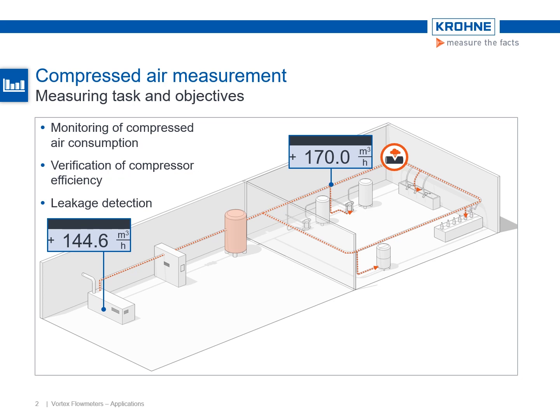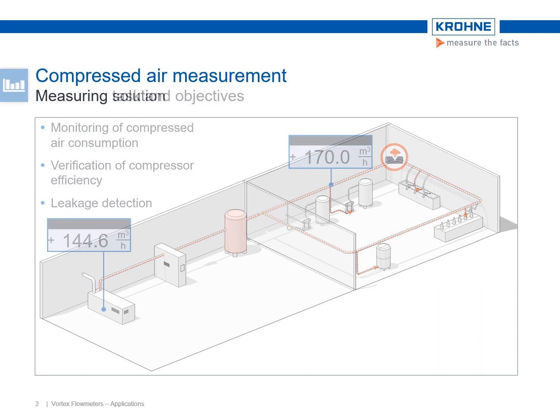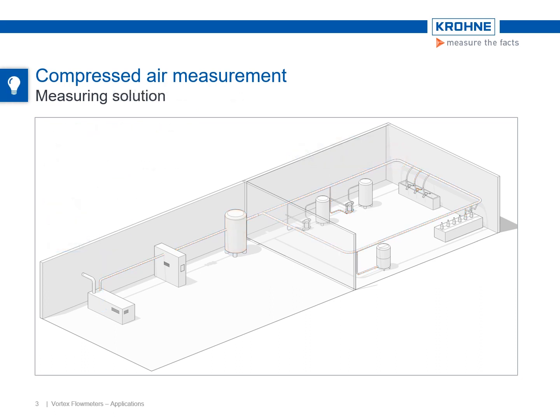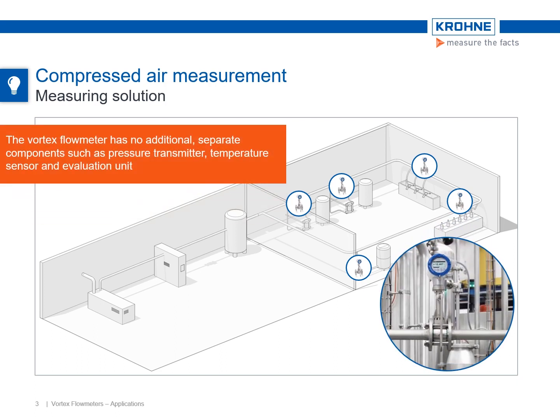In this context, the company planned to invest in a flow measurement solution. Several vortex flow meters were calibrated to standard conditions and used to monitor the compressed air network and the connected consumers. The measuring devices are used in the supply lines of individual plants, such as beverage filling, to monitor the consumption.